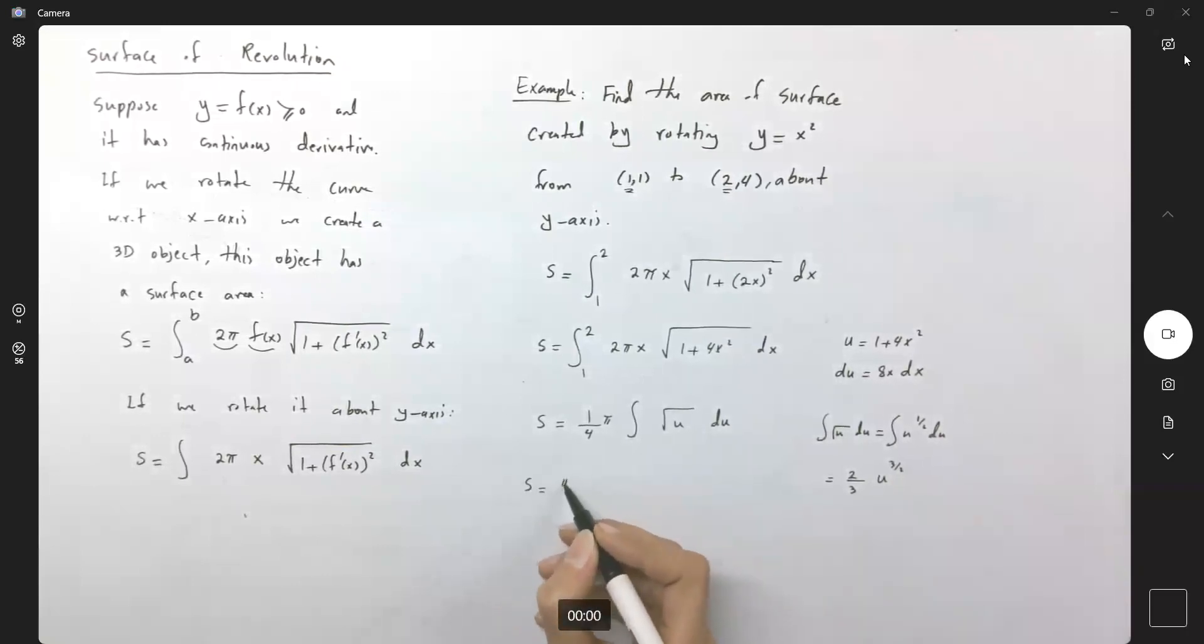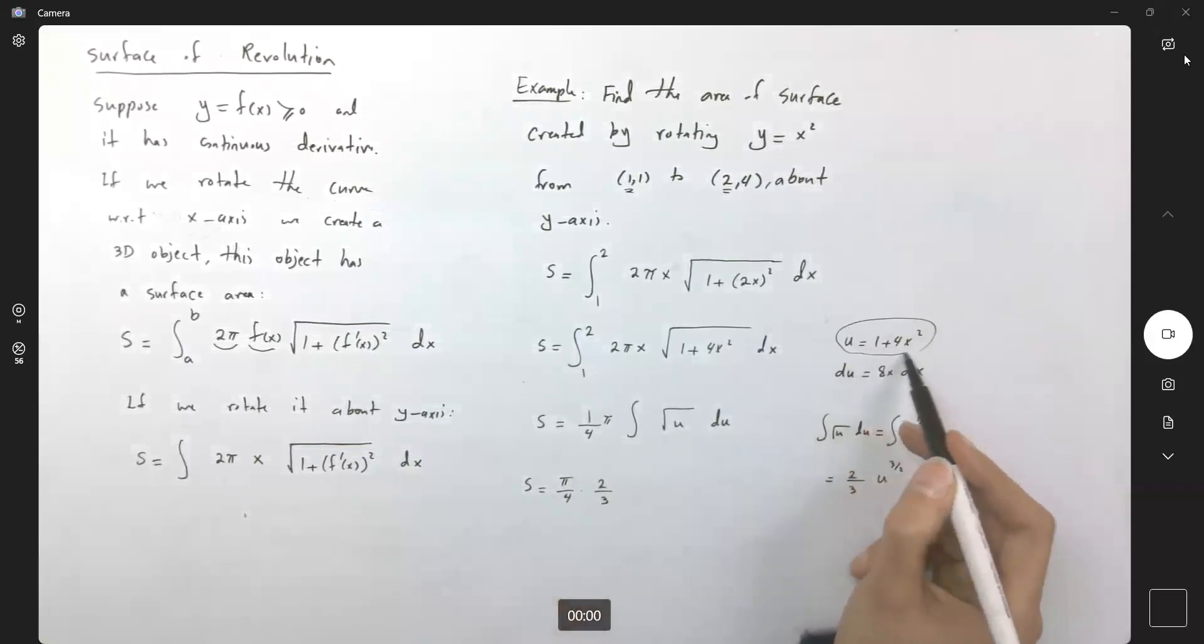So s is pi over 4 times 2 over 3. My u is nothing but 1 plus 4x squared, and x ranges between 1 to 2.